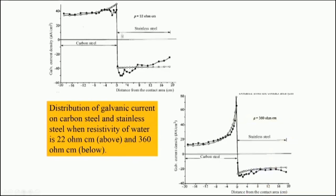For carbon steel and stainless steel combinations, the galvanic corrosion current density of carbon steel is much higher than that of stainless steel, which is essentially non-corroding. This also depends on the resistivity of the environment — in water environments where resistivity is quite low, the galvanic current density is much higher compared to cases where resistivity is very high. Higher ionic conductivity of the electrolyte leads to a higher rate of corrosion attack.